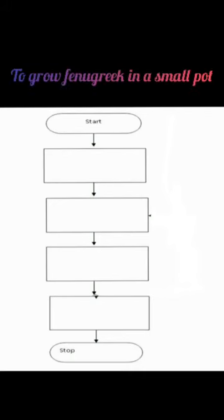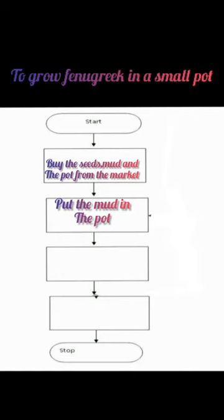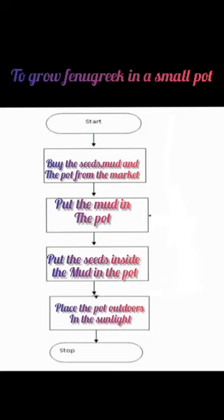Next, to grow fenugreek in a small pot. Steps: first, buy the seeds, mud, and the pot from the market; second, put the mud in the pot; third, put the seeds inside the mud in the pot; and fourth, place the pot outdoors in the sunlight.